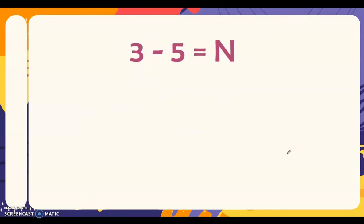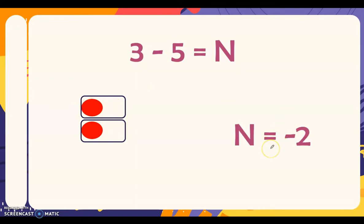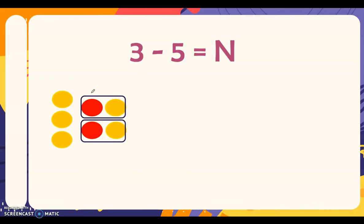Next: 3 minus 5 is equal to n. We represent 3 as 3 yellow chips. We need to subtract 5 yellow chips but only have 3, so we add 2 zero pairs. We can now subtract 5 yellow chips and are left with 2 red chips. Therefore, n is equal to negative 2. Remember: add only as many zero pairs as you need to perform the subtraction.